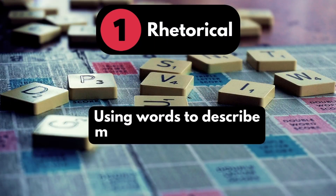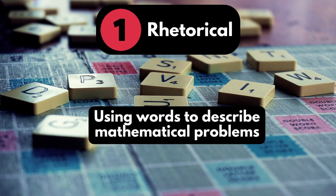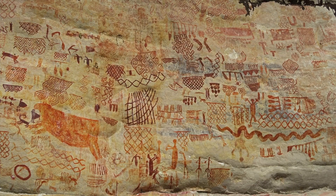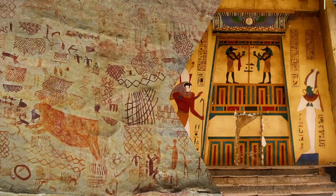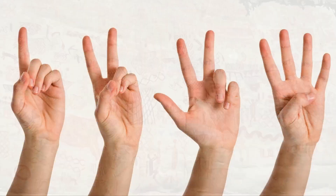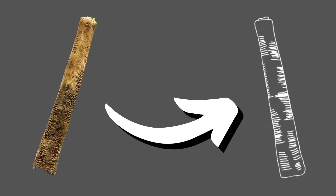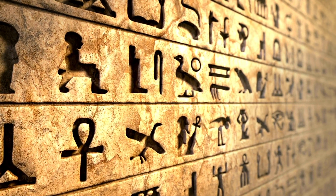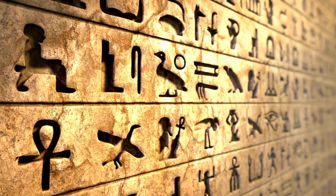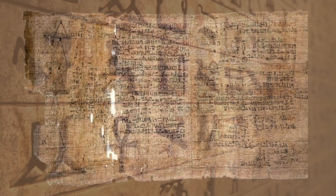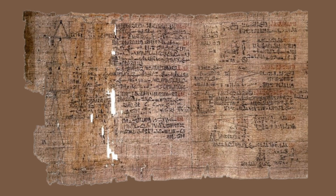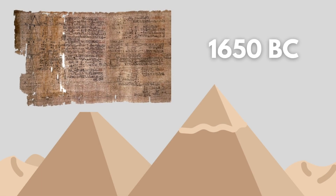Here, mathematics was characterised by the use of words and verbal explanations to represent concepts. This incorporates almost all prehistoric and ancient mathematics until around 1000 BC. Humanity began by first using body parts as a way of counting, to documenting numbers as tallies on ancient bones. Eventually we see a move to writing down descriptions of mathematical problems — an example of this is the Rhind Mathematical Papyrus, which was written in ancient Egypt around 1650 BC.